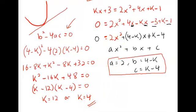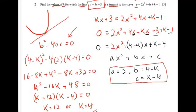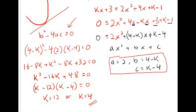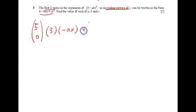Now for question 3: the first three terms in the expansion of (3 − ax)⁵ in ascending powers of x can be written in a given form. Find the values of a, b, and c. For the first term, we write ⁵C₀ times (3)⁵ times (−ax)⁰, and then plus ⁵C₁ for the second term.